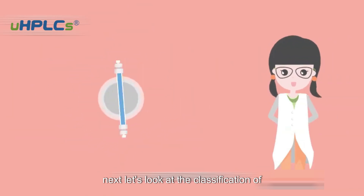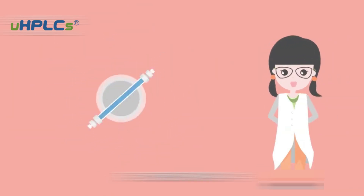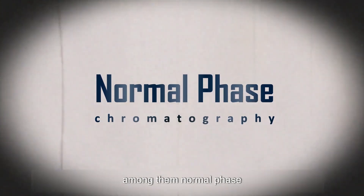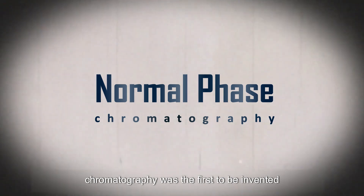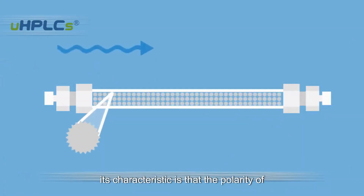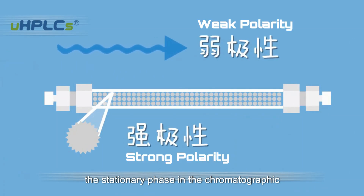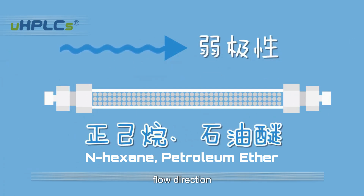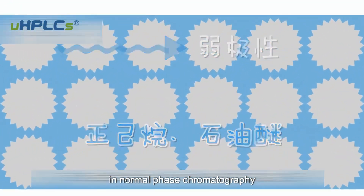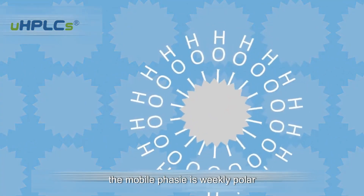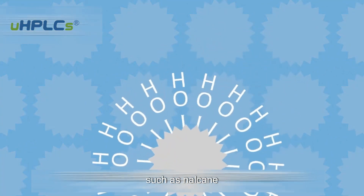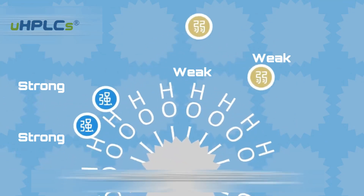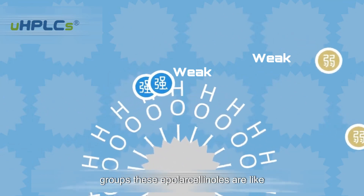Next, let's look at the classification of liquid chromatography. There are many types of liquid chromatography. Among them, normal phase chromatography was the first to be invented. Its characteristic is that the polarity of the stationary phase in the chromatographic column is greater than the polarity of the mobile phase. In normal phase chromatography, the mobile phase is weakly polar, such as N-alkane or petroleum ether. The stationary phase is polar, such as silica gel with silanol hydroxyl groups.